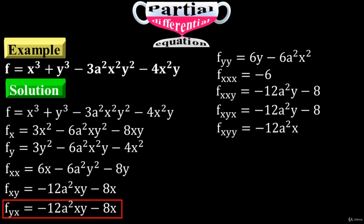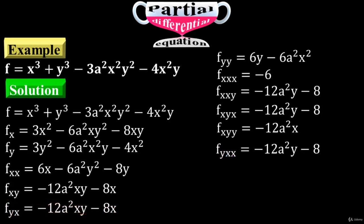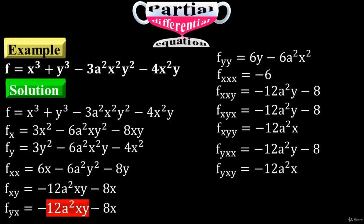Now differentiate f sub yx first with respect to x — both terms have x variables, so just differentiate them to have f sub yxx. Differentiation of f sub yx with respect to x is minus 12a squared times y minus 8. Then differentiate with respect to y — this is the term with a y variable — to have f sub yxy. Differentiation of f sub yx with respect to y is minus 12a squared times x.